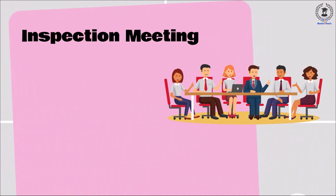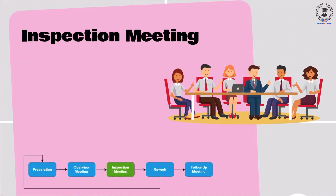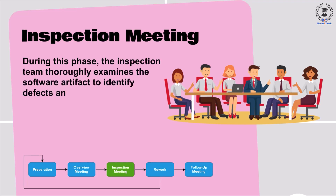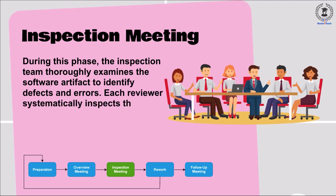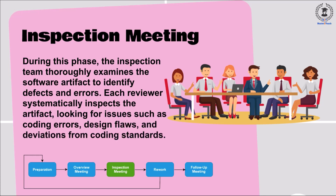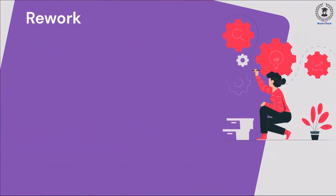Inspection Meeting. During this phase, the inspection team thoroughly examines the software artifact to identify defects and errors. Each reviewer systematically inspects the artifact, looking for issues such as coding errors, design flaws, and deviations from coding standards.